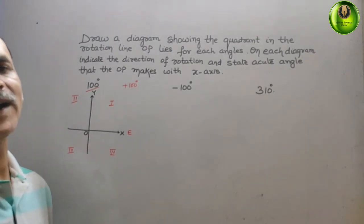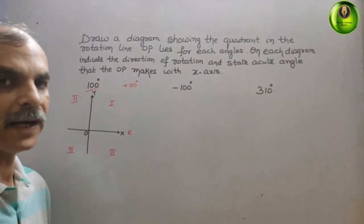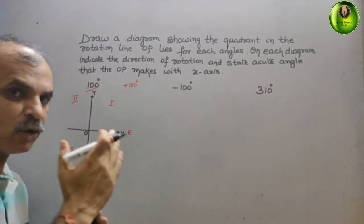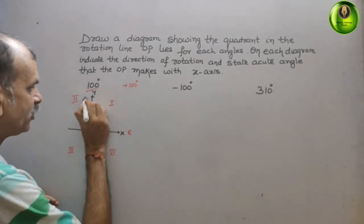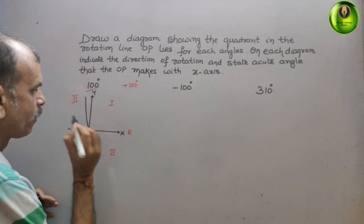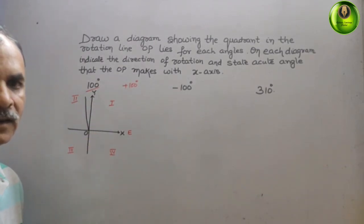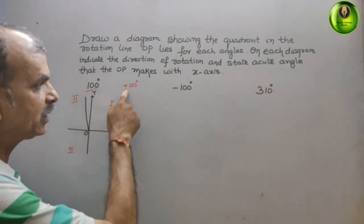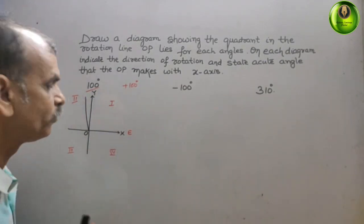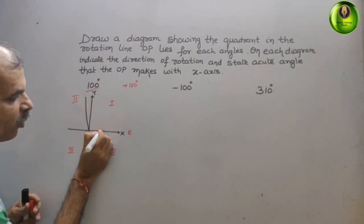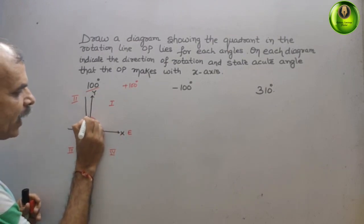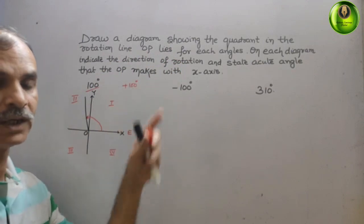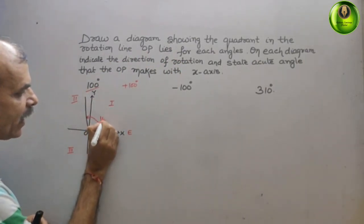Now we have to draw 100 degrees. From the X-axis to the Y-axis it is 90 degrees; after that only 10 more degrees are required. So this is the line at 100 degrees. The rotation is anti-clockwise since it is given as positive, so we start from here and make an arrow reaching the 100-degree line in the anti-clockwise direction. We write 100 degrees here.